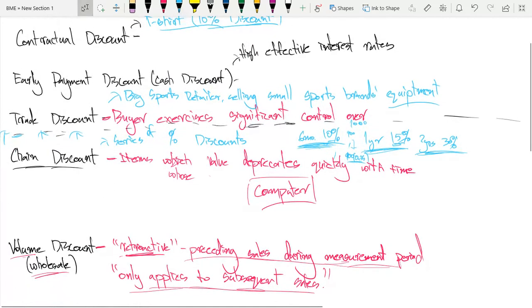The next one is a volume discount, which is very similar to wholesale price. Basically what a volume discount is, is once a customer reaches a certain amount of sales volume during the measurement period, which is typically a year, a volume discount applies.